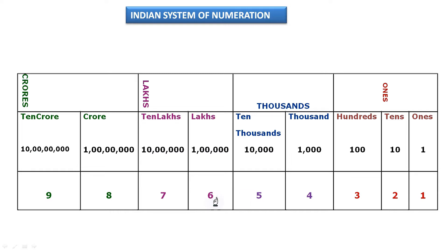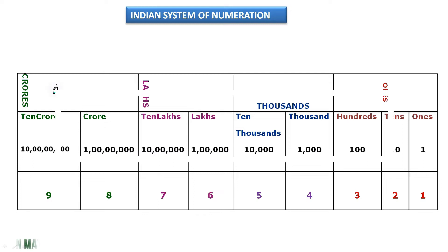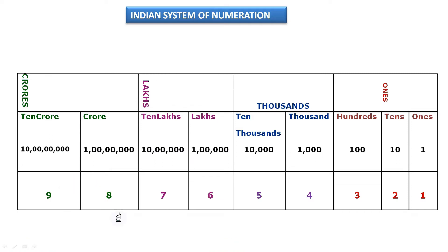For example, a six-digit number starts reading from lakhs because the sixth place is lakhs. In the ones period we have ones, tens, and hundreds. In the thousands period we have thousands and ten thousands. In the lakhs period we have lakhs and ten lakhs. In the crores period we have crores and ten crores.